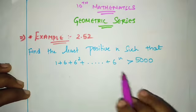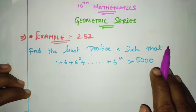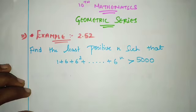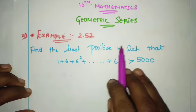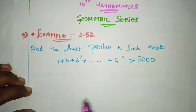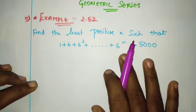So what they're asking is, given this series greater than 5000, we need to find the least positive value of n. We need to find the n value.